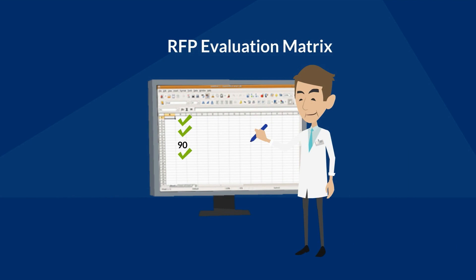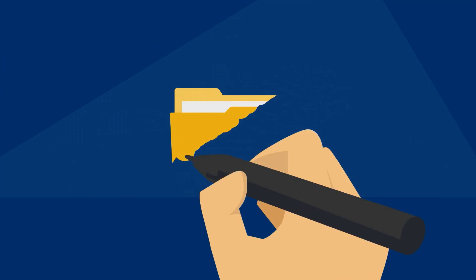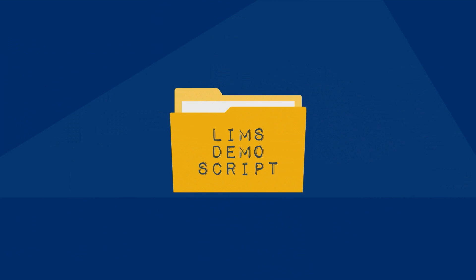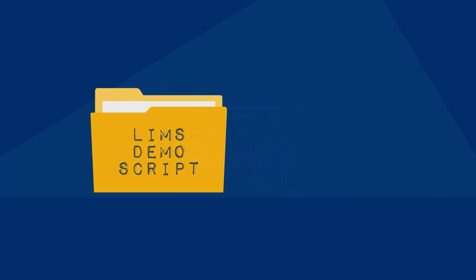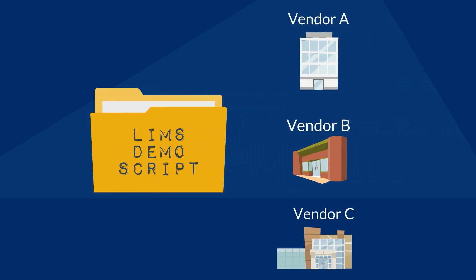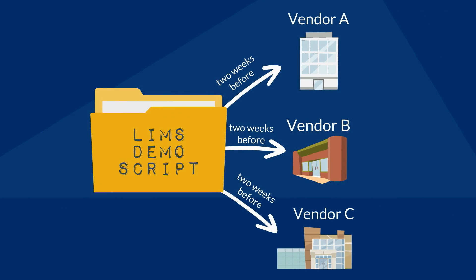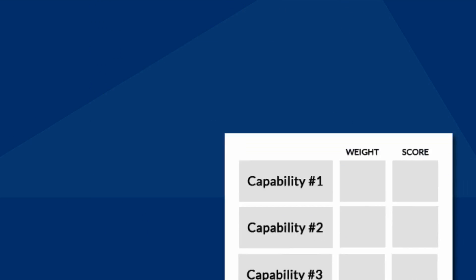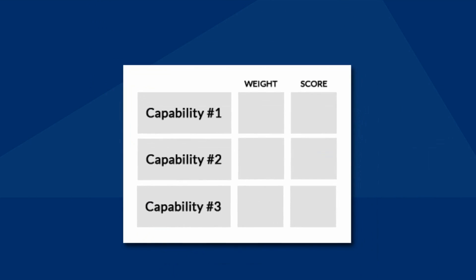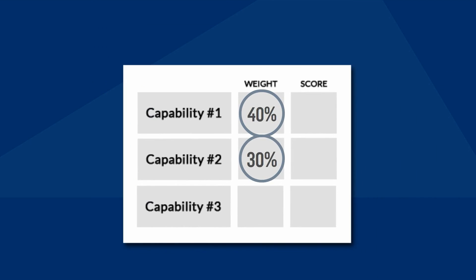Once you have narrowed down your LIMS vendor field, it is time for the LIMS demos. Again, to keep things objective and to make sure you get to see what is important to you, it is critical to develop and provide a demonstration script. Be sure to give the script to each participating vendor for an equal amount of time prior to their scheduled demo to maintain that even playing field. A demonstration scorecard that lists exactly what to look for in the demo with appropriate weighting factors should be used to maintain objectivity when rating those demos.